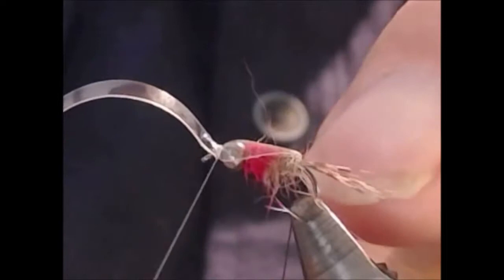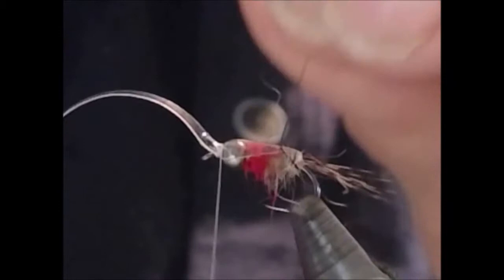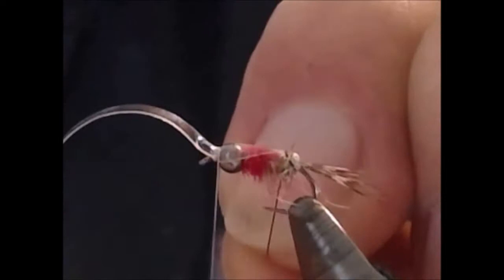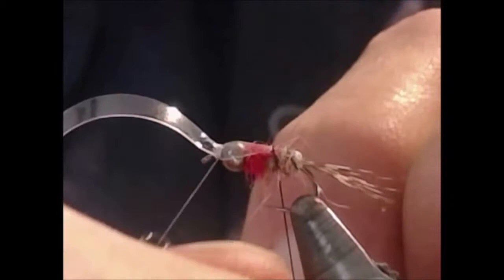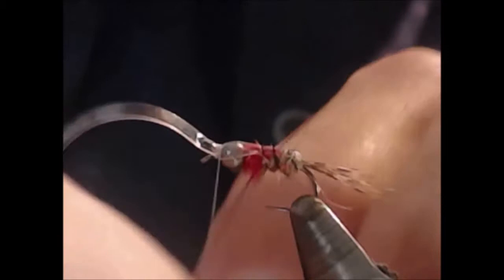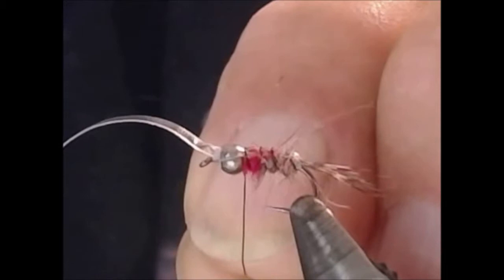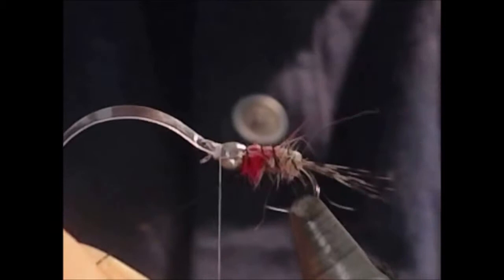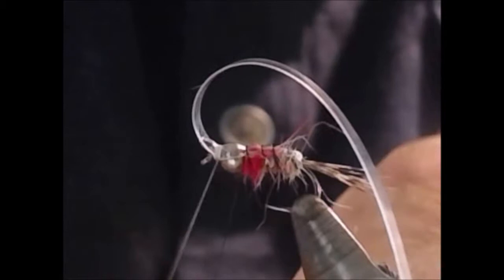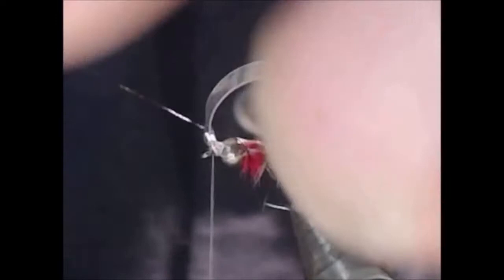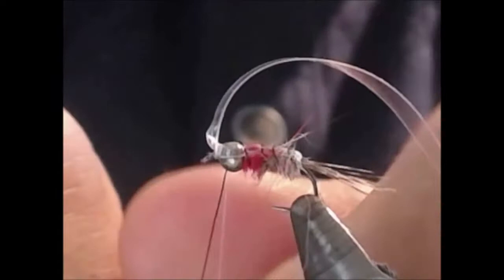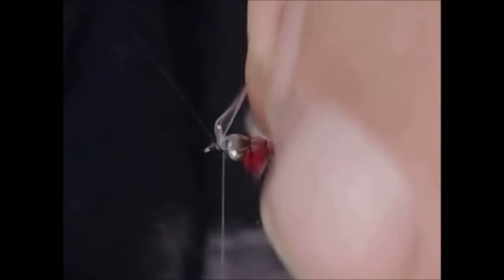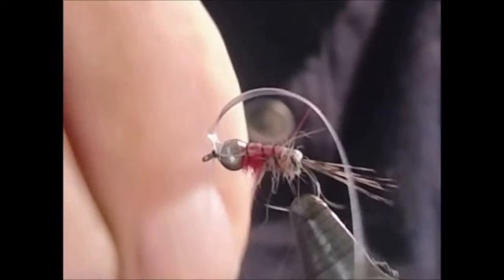Then we'll bring our ribbing forward. We'll get right next to our bead, making sure our wrap is right behind the bead, and then bring it up and over.